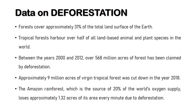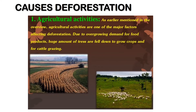Tropical forests are a major source of global biodiversity and resources. One of the key causes of deforestation in tropical areas is cattle production — forests are cut down to create land for beef and livestock farming.